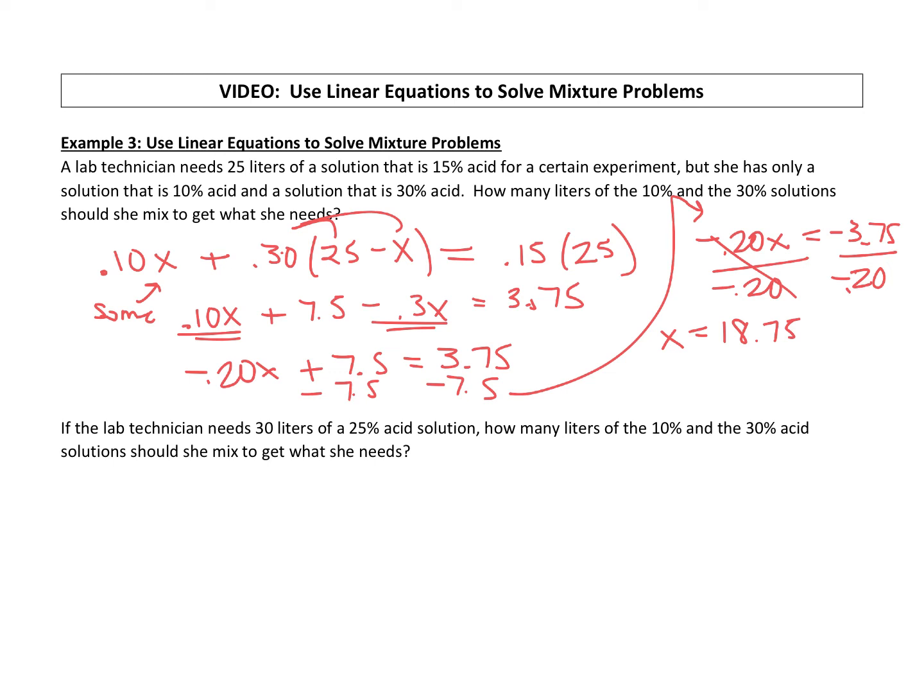Okay, so what is x? Remember, x is how much of the 10% solution she should use. So she should use 18.75 liters of the 10% solution. Well, remember she needs 25 total liters, so if we take 25 and subtract the 18.75, that's going to give us the rest of it, which is 6.25 liters of the 30% solution.